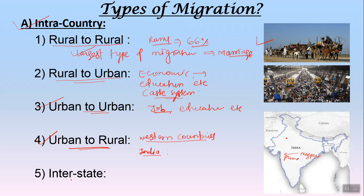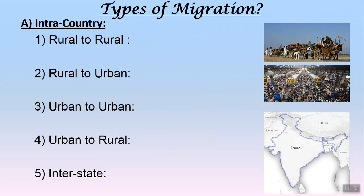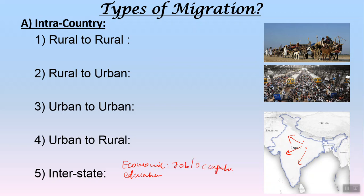Another type is interstate migration — people moving from one state to another, like from UP and Bihar to New Delhi, Maharashtra, or Chennai. This can be due to economic reasons for betterment of life or education, including preparation for civil services, which is a key example of students migrating from different states to New Delhi.